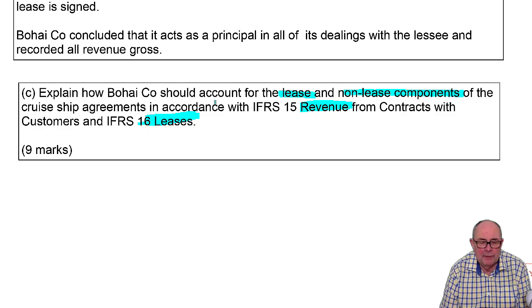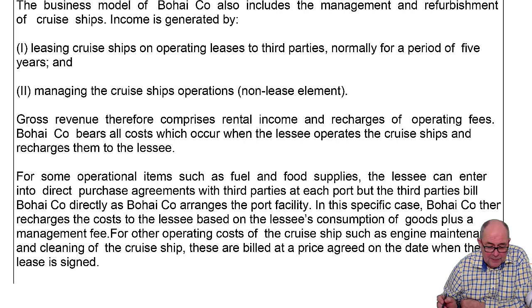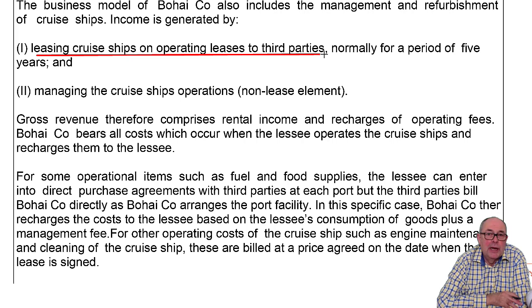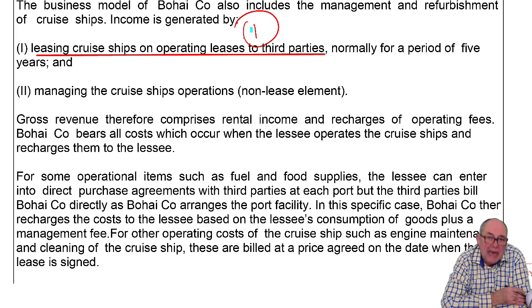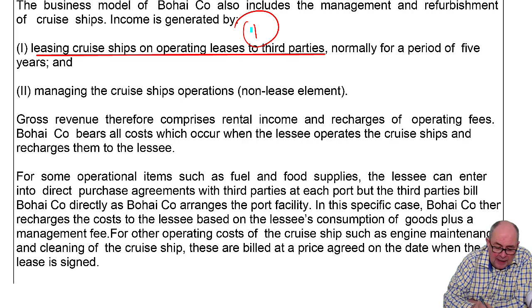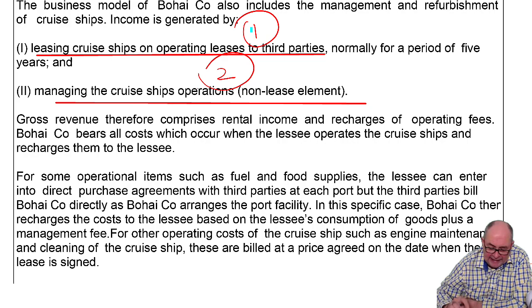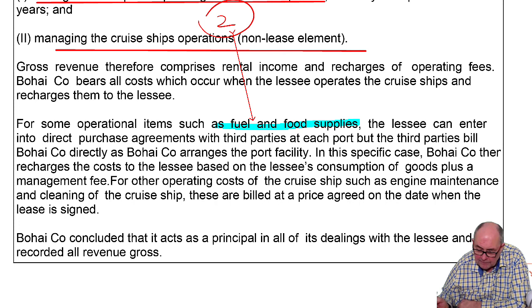Pause the recording if you need to remind yourself about the scenario. They lease cruise ships out — operating leases — which makes sense because the life of a big ship must be 40 years or something, and they just rent them out for five years. Some of the money is coming in from these operating leases. The rest is coming in for other things: there are two types — fuel and food, and maintenance and cleaning.